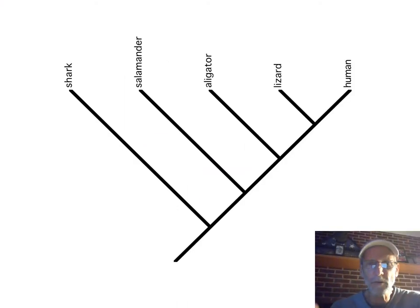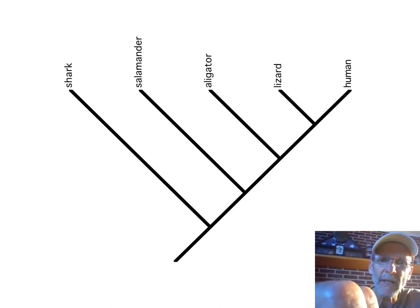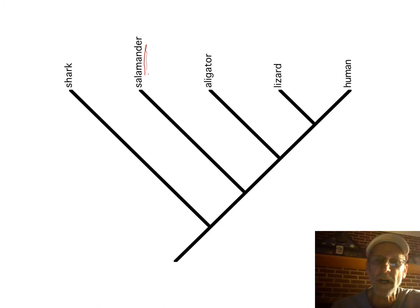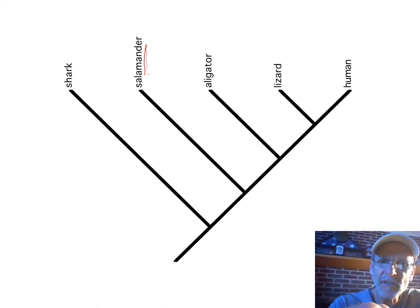Make my final set of comments here on phylogeny trees. So here we have one, which of these is most closely related to salamander, if that was the kind of question? Well, the shark would be least related to the salamander. Why? Because the common ancestor they share is longer ago than the common ancestor that the salamander shares with these other three.